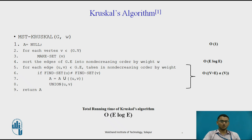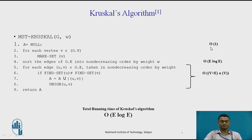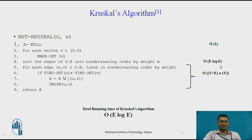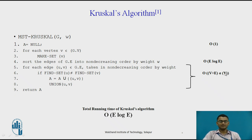This is the algorithm for Kruskal's. The complexity for step one is O(1). The complexity for sorting at line four is O(E log V), and the block from line five to line eight takes O(V + E · α(V)), where α is the inverse Ackermann function. The total running time of Kruskal's algorithm is O(E log E), or equivalently O(E log V), which is similar to Prim's algorithm.